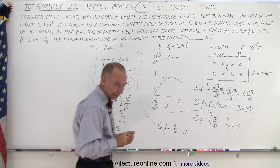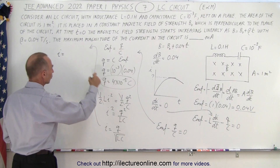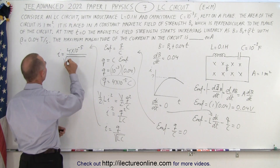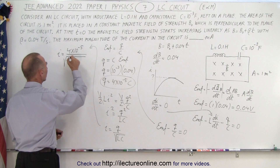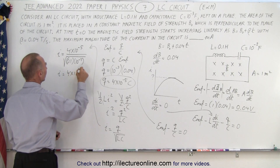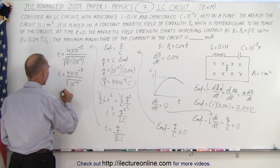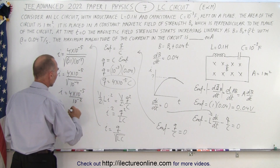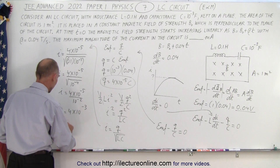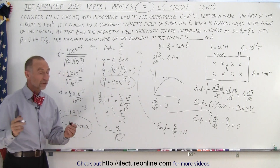So the current I equals Q divided by the square root of L·C, which is 4 times 10 to the minus 5, divided by the square root of 0.1 times 10 to the minus 3, which equals the square root of 10 to the minus 4, which is 10 to the minus 2. Therefore I equals 4 times 10 to the minus 5 divided by 10 to the minus 2, giving I equals 4 times 10 to the minus 3, or 4.00 milliamps. That is the answer.